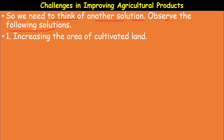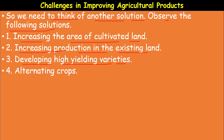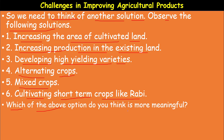Observe the following solutions: first, increasing the area of cultivated land; second, increasing the production in the existing land; third, developing high yielding varieties; fourth, alternating crops; fifth, mixed crops; and sixth, cultivating short-term crops like Rabi. Increasing the area of cultivated land is not the right method, but the other five options — increasing production in existing land, developing high yielding varieties, alternating crops, mixed crops, and short-term crops — are possible to implement.